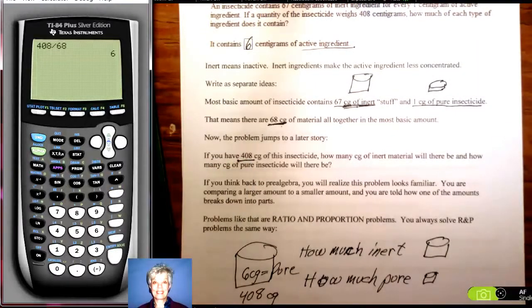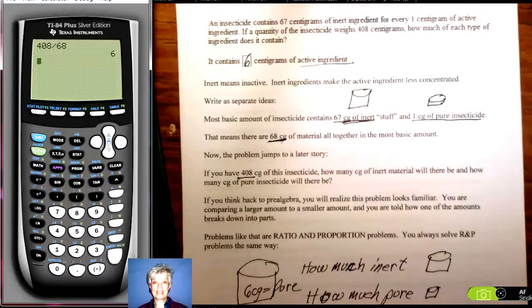We're going to have 6 centigrams of the active ingredient. Now, how do we do this? We said, okay, I've got this small batch of insecticide, 67 centigrams of it are inert and 1 centigram is active. Altogether, there are 68.